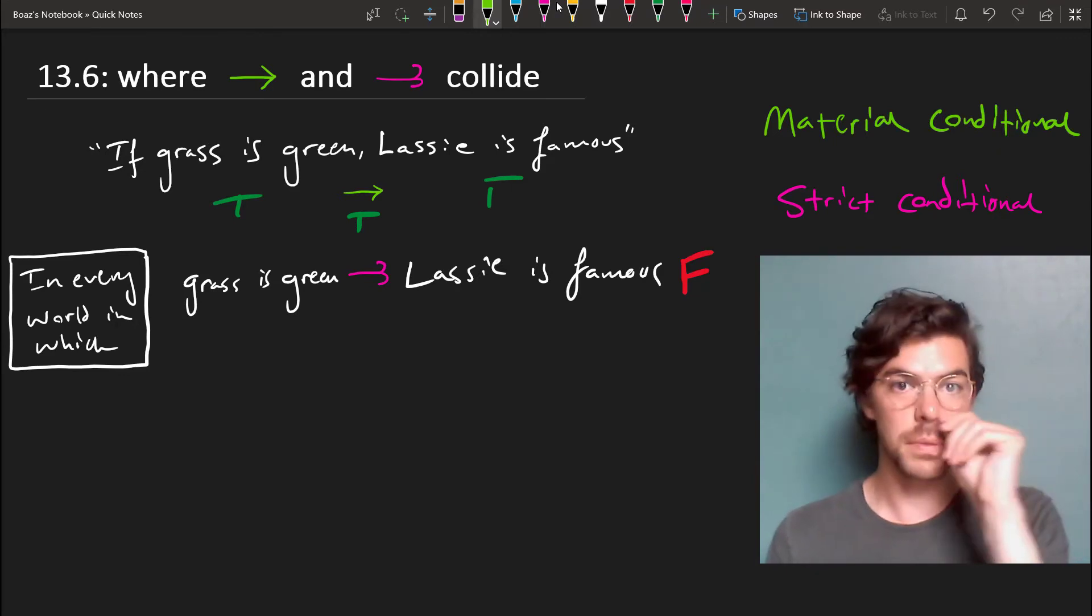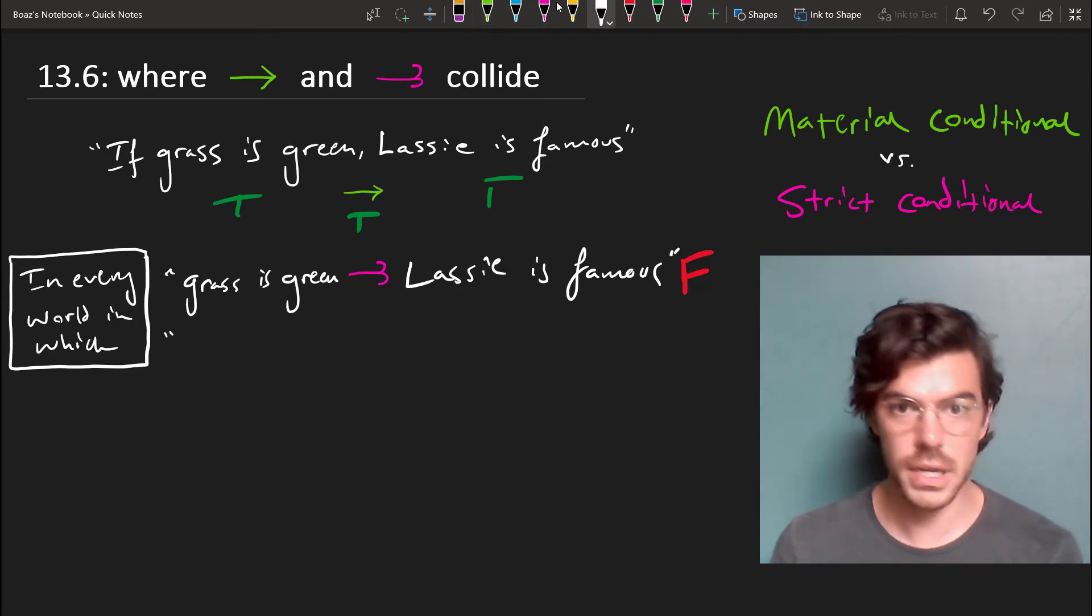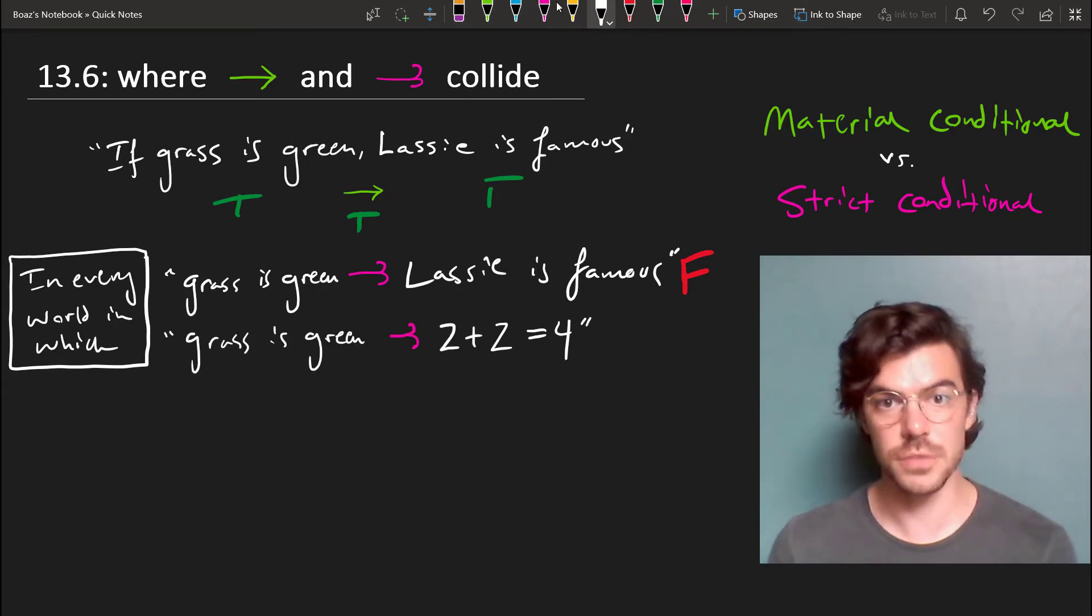But it has problems of its own. For instance, consider the following, which will be true because the consequent is true in every world. If grass is green, then 2 plus 2 equals 4.